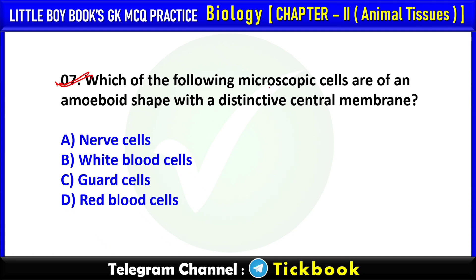Q7. Which of the following microscopic cells are of an amoeboid shape with a distinctive central membrane? Option number B is the correct answer: white blood cells.